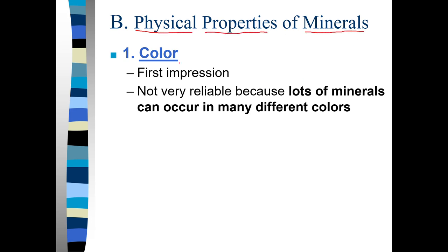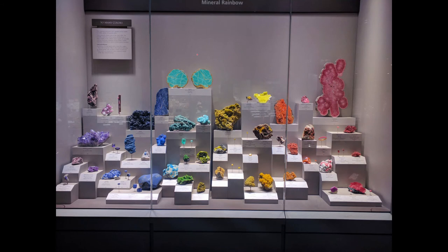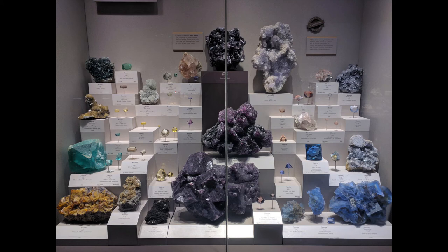Let's talk about the physical properties of minerals. The first is color — when you grab a mineral you'll first notice its color, but that can be dangerous because color isn't very reliable. Some minerals come in only one color; others come in a rainbow. These are all different minerals. These are all the same mineral — fluorite — which can be many different colors. Quartz and calcite can also be a rainbow of colors and can even look like each other.